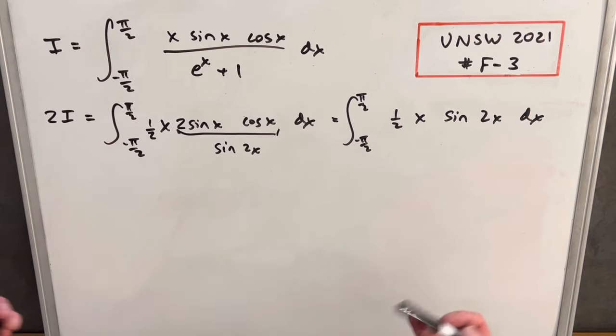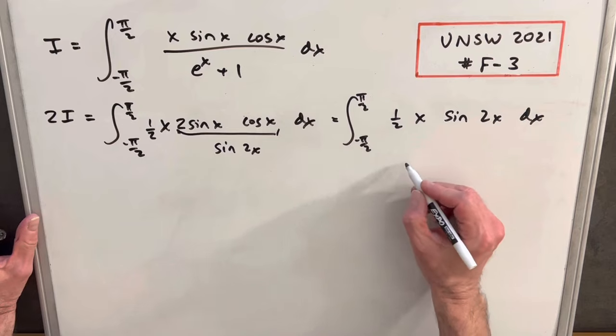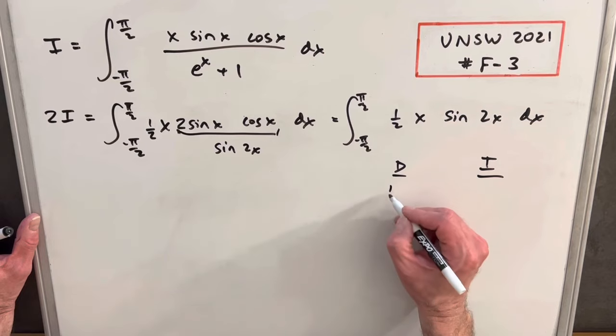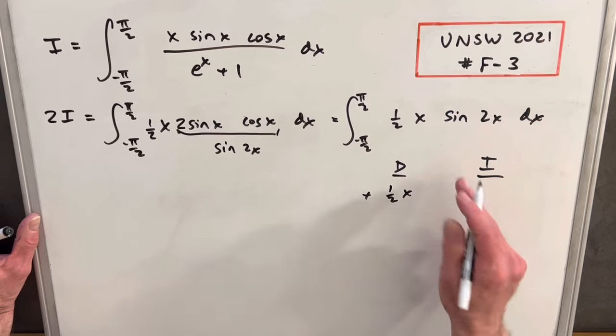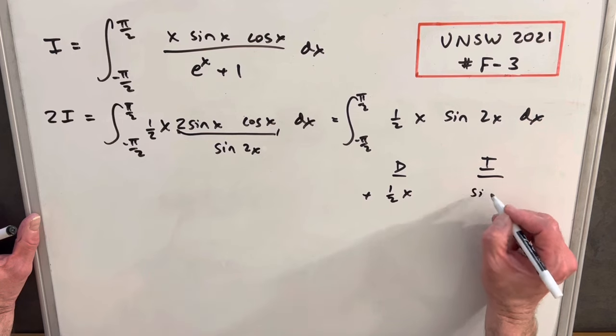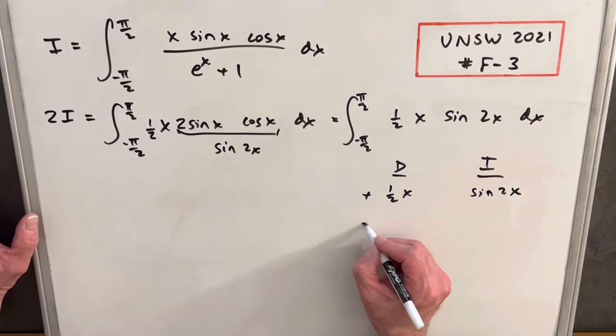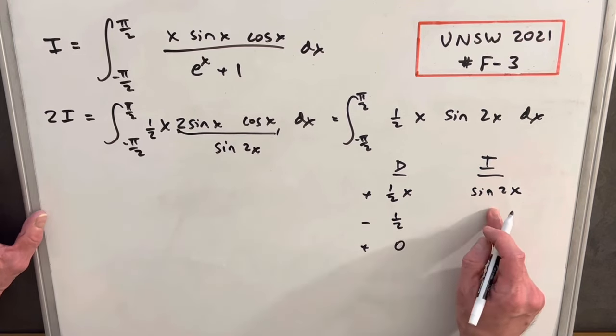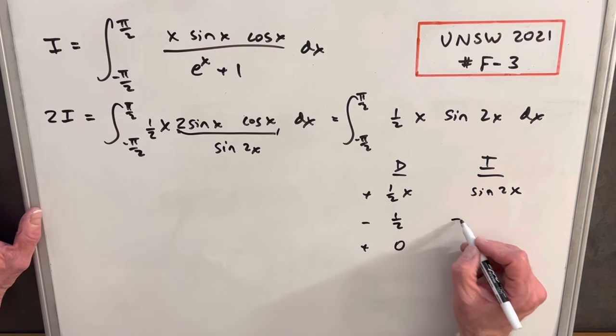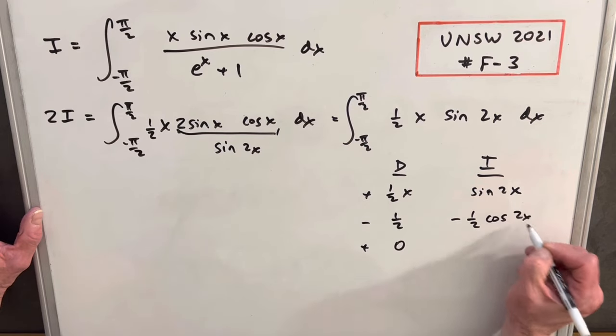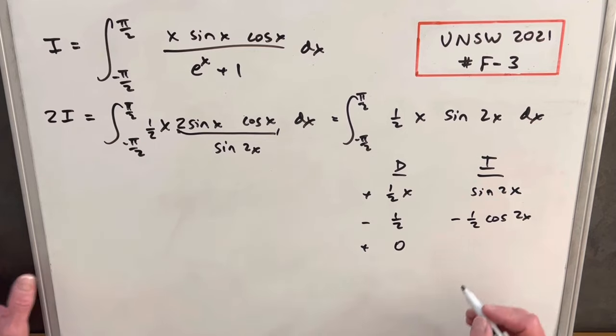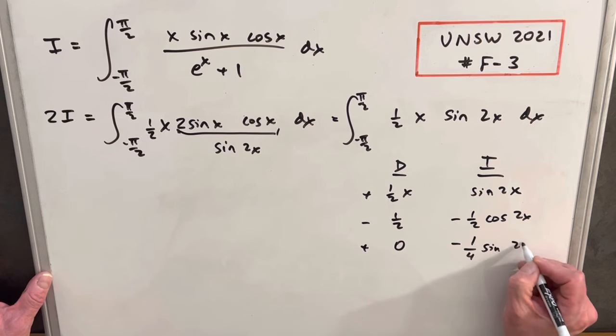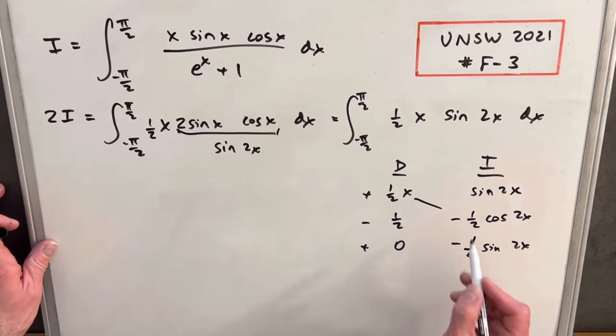Then to integrate, we'll use integration by parts, the DI method, tabular integration. I'm going to make two columns here, D to differentiate and I to integrate. I'm going to differentiate my half x because it's going to reduce nicely, and integrate sine of 2x. Differentiating our half x, we have one half. Differentiating again, we have zero. Integrating sine 2x, we have minus one half cosine 2x. And integrating one more time, we bring our two out again, so we have minus one fourth sine 2x.